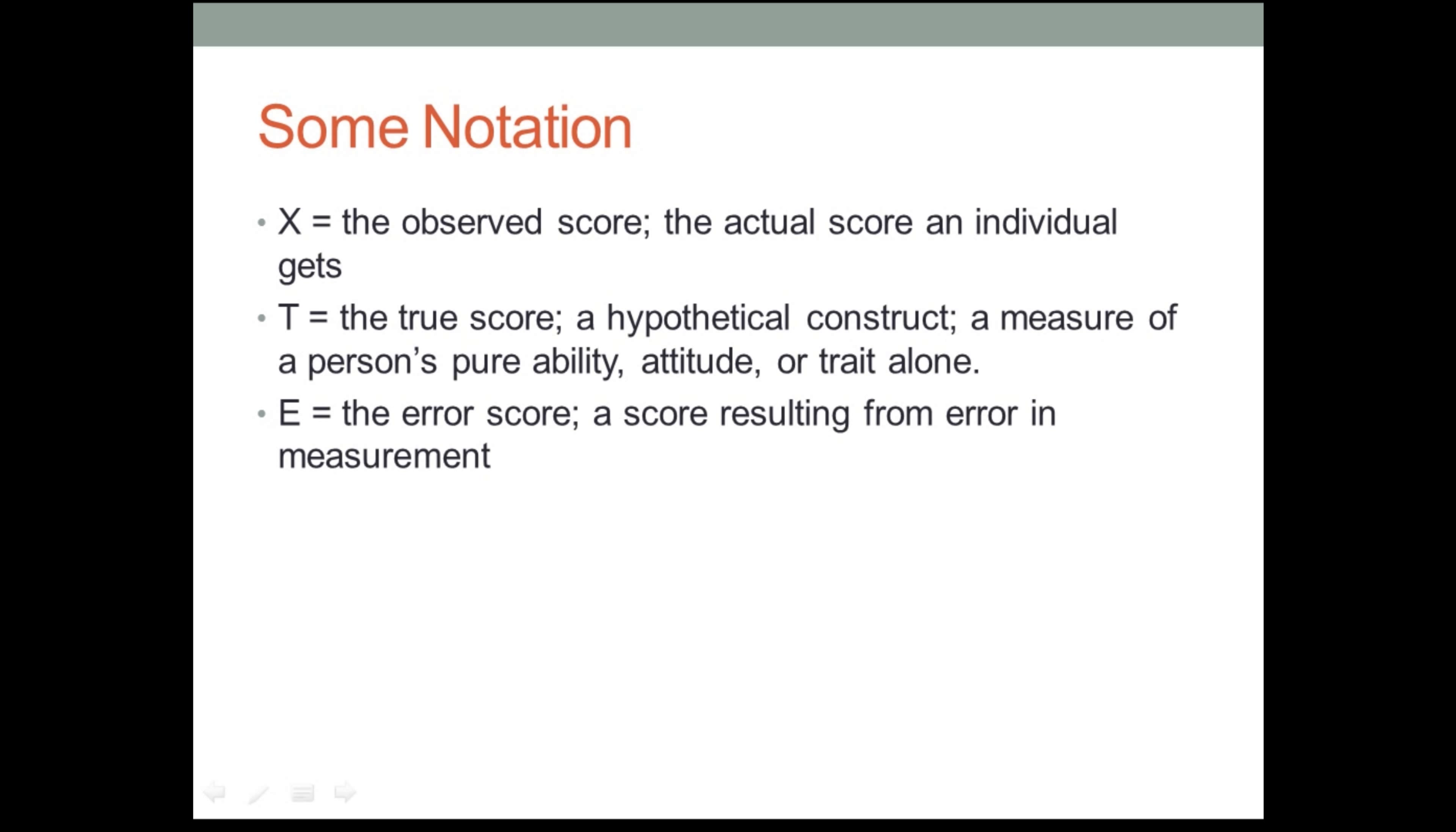And one of the things that accounts for the discrepancies between the obtained score and the true score is this E, this error score. That is, there is some degree of that obtained score is a consequence of an error, not necessarily our error, but an error in measurement. That is to say that the psychometrician, the person who uses psychometrics, who uses test theory, has built into the assumption, there's going to be some error here.